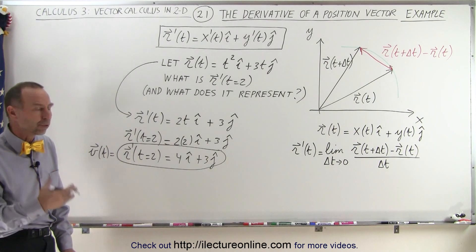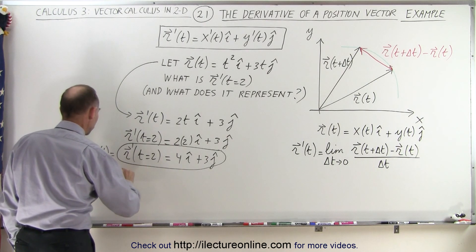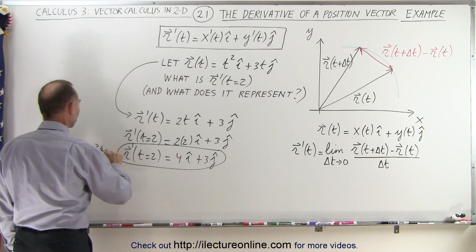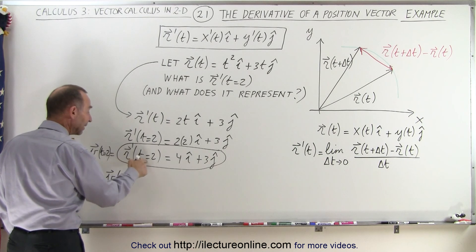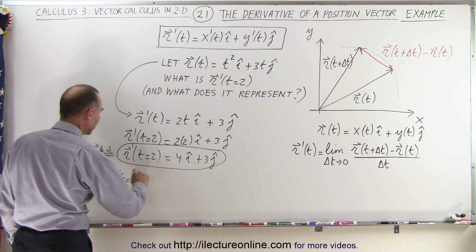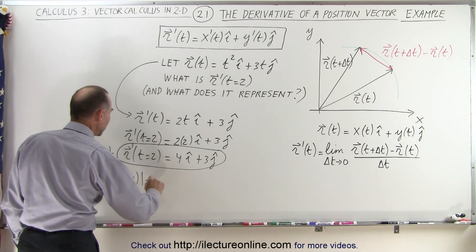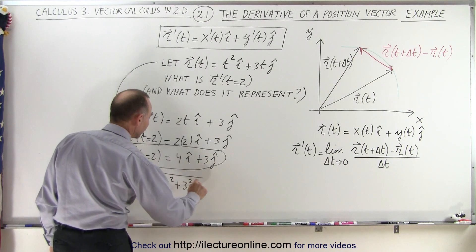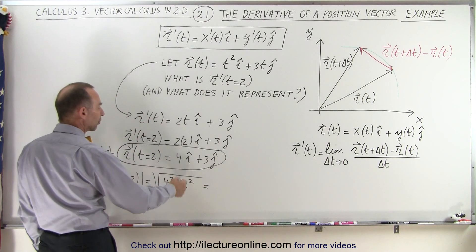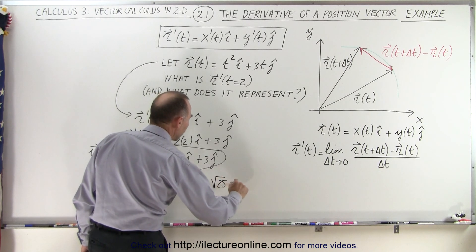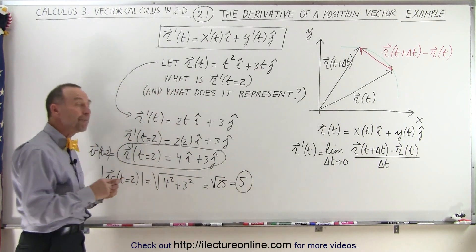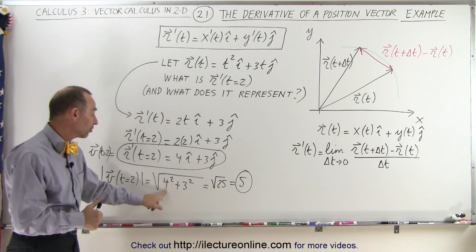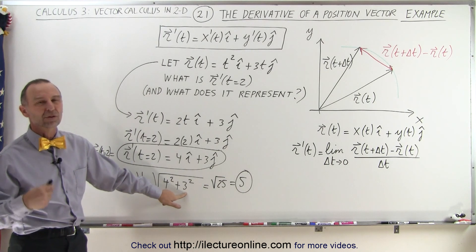What would be the magnitude of the total velocity? The velocity at t equals 2 — the magnitude of that would be equal to the square root of the x component squared plus the y component squared, which is equal to the square root of 16 plus 9, which is equal to the square root of 25, which is equal to 5. That means the magnitude of the velocity would be 5, but the component of that velocity in the x direction would be 4, and in the y direction would be equal to 3.